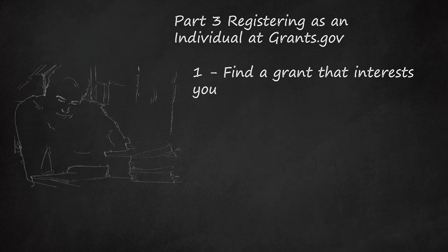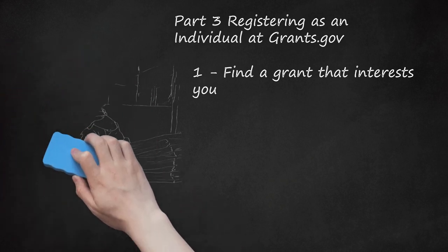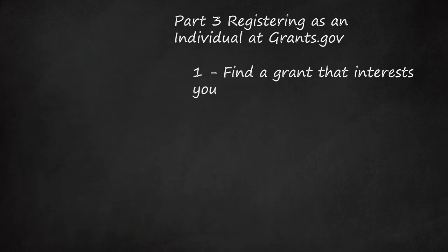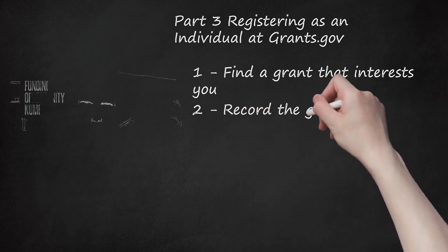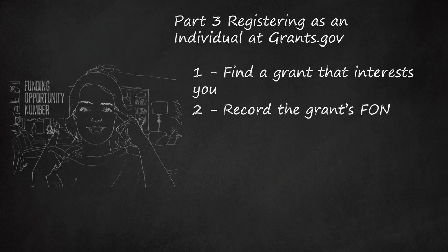The first step for applying for any federal grants registered through Grants.gov is to do the research and find a grant. Read the details of the application and ensure that the grant is available to individuals. Make sure that you meet any other eligibility requirements for the particular grant, and check for the type and location of the project. The Funding Opportunity Number (FON) is a unique number that Grants.gov assigns to all the grants that it lists. When you find a federal grant through Grants.gov that interests you, make a note of this number — you will need it to continue your registration and application.